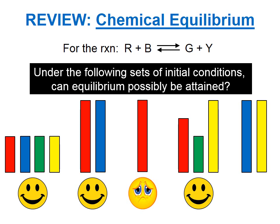How about this last case? If we start with blue and yellow, can we reach equilibrium? And the answer is no, because we can't get red and we can't get green starting with just blue and just yellow.